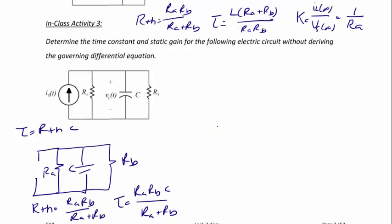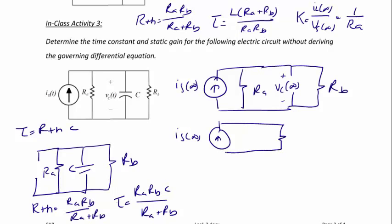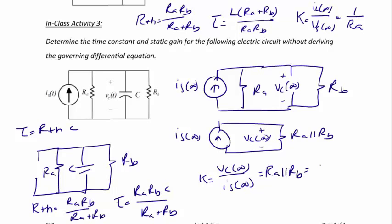Now we analyze the circuit under steady state DC conditions to find K. Under DC conditions, the capacitor becomes an open circuit. We have current source I_s(∞), resistor R_A, the capacitor as an open circuit with voltage V_c(∞), and R_B in parallel. This simplifies to a current source I_s(∞) driving the equivalent resistance R_A parallel R_B, with V_c(∞) across it. So K equals V_c(∞) over I_s(∞), which by Ohm's Law equals (R_A · R_B)/(R_A + R_B).